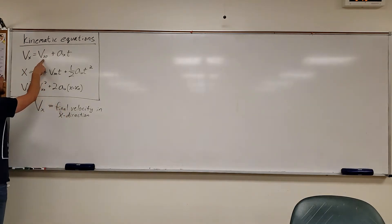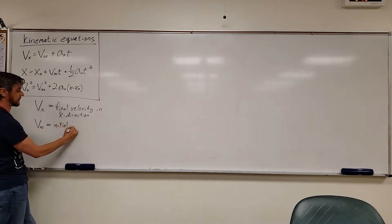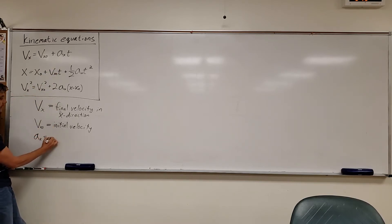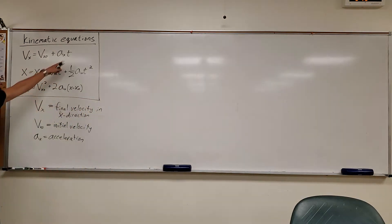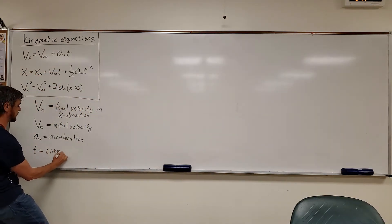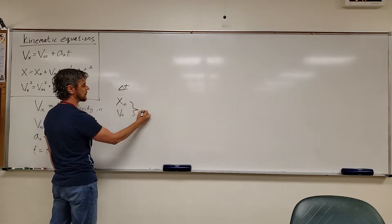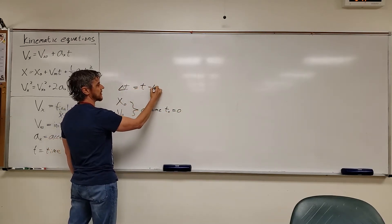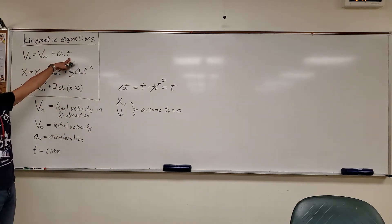The next symbol is VX-naught, which means initial velocity in the X direction. If we're talking about vertical motion, we replace the X with Y. The A with subscript X is acceleration in the X direction. And T is time. Technically T stands for delta T, but when we use naught subscripts like V-naught, we assume T-naught is zero, so delta T is just T. We assume we start our stopwatch at time T equals zero.